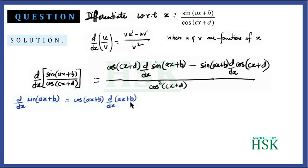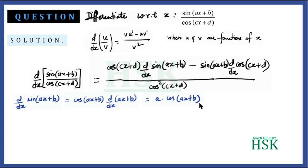Since a and b are constants, differentiation of b is 0 and only x is differentiated. Differentiation of x with respect to x equals 1, so we get a. Therefore, d/dx of sin(ax + b) equals a·cos(ax + b).